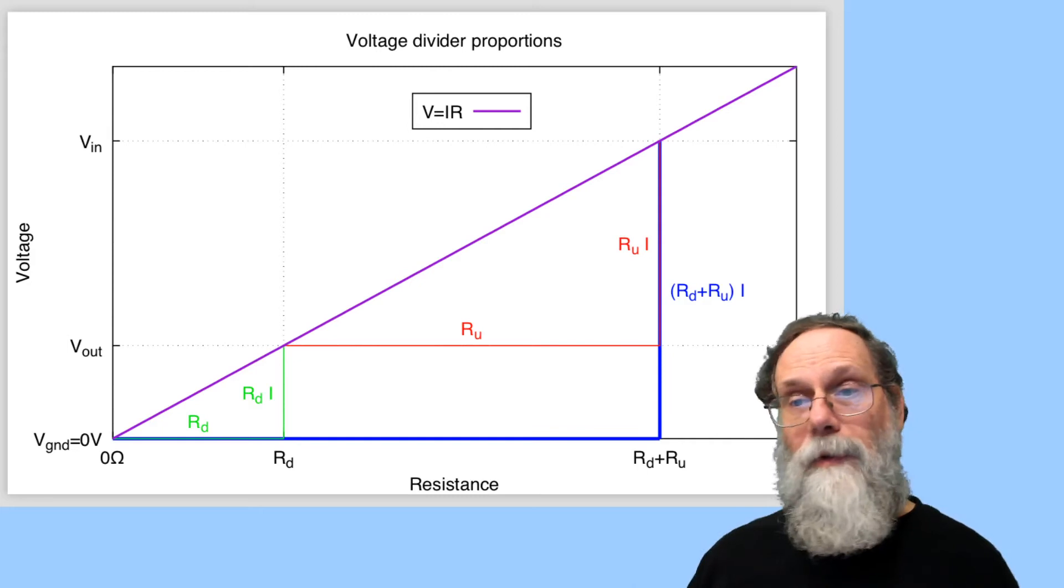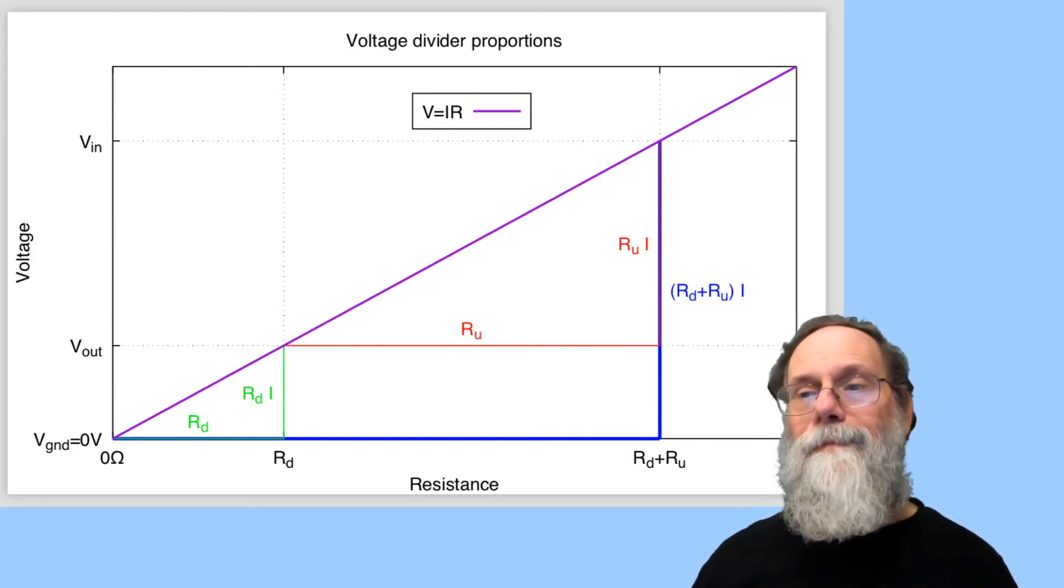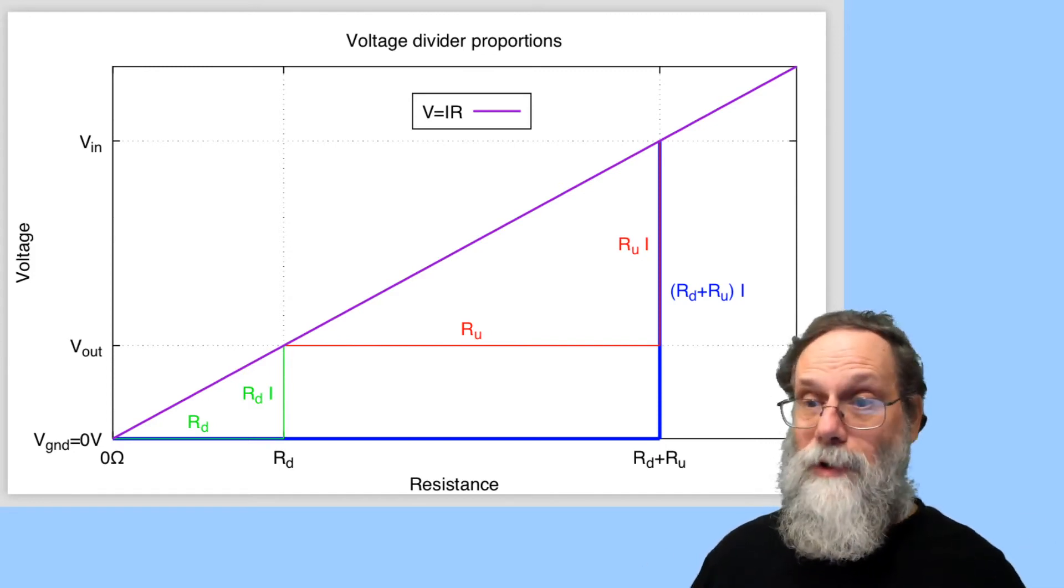And in fact, this linear scaling works in general. You can take, if I had a series of resistors, let's take a look at what would happen if we had three resistors.